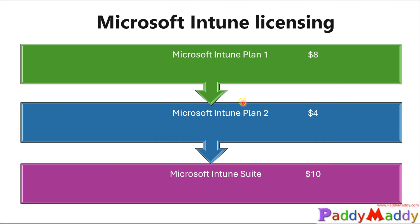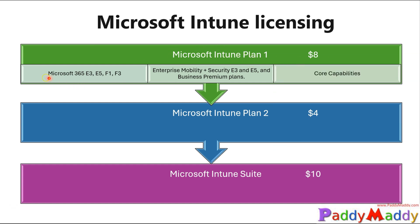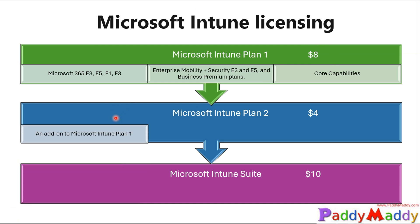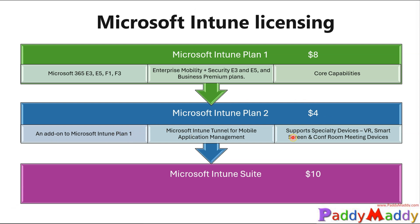Plan 1 has the core functionality of Microsoft Intune and is already bundled with Microsoft 365 E3, E5, F1, and F3 licenses — if you have any of these, you have Plan 1. The cost is close to $8. Microsoft also offers Plan 2, which is an add-on on top of Plan 1, requiring an additional $4 to get additional features.